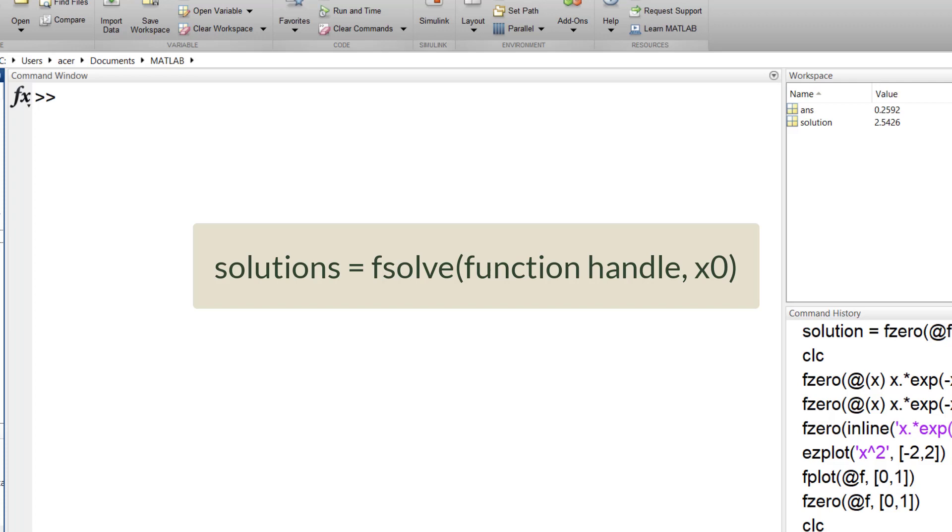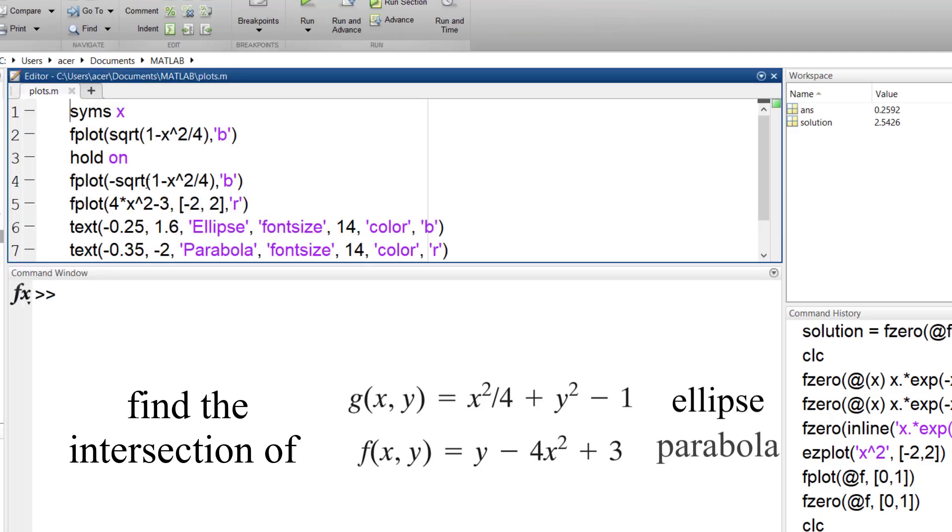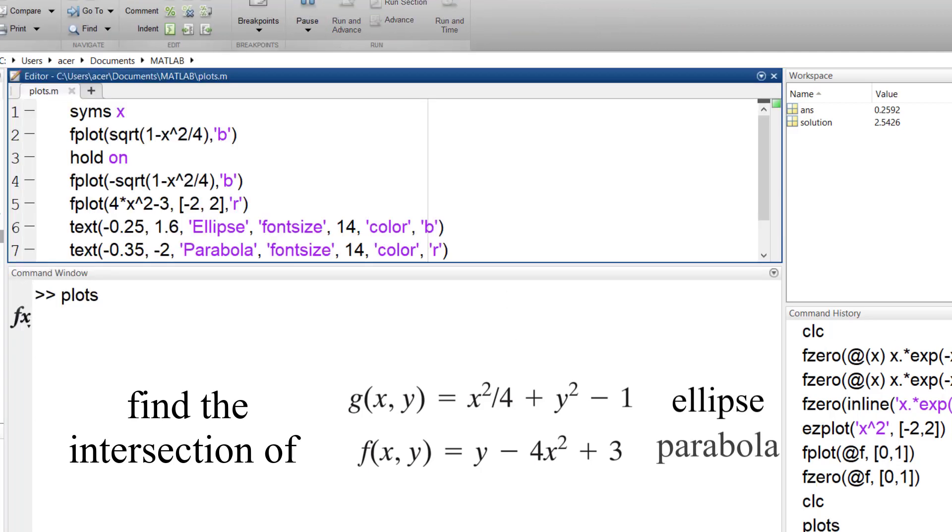Since we want to solve a system of equations here the output of this function must be a vector containing each equation and x0 is a vector containing the initial guesses. Look at this example: find the intersection coordinates of this ellipse with this parabola. I also plot them to show the intersections.